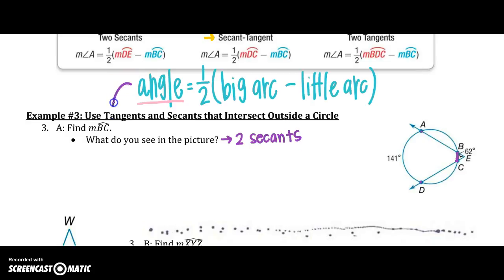So I'm going to follow this rule right here. My angle, the measure of angle E equals one half of my big arc. Well, here's my big arc. Arc AD minus, and that's super important. And don't forget to subtract.